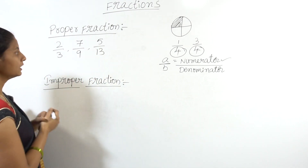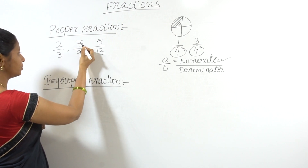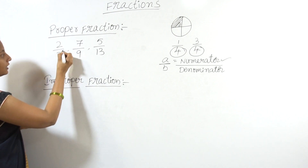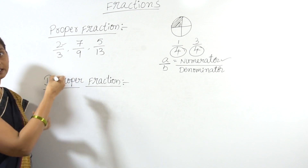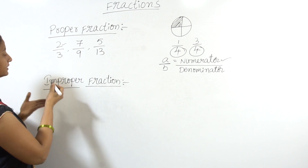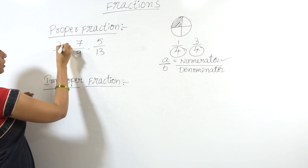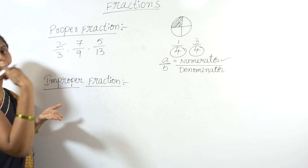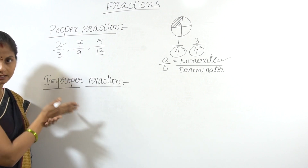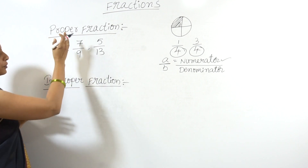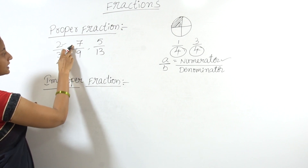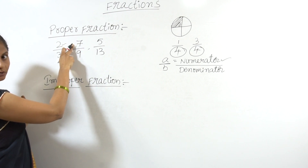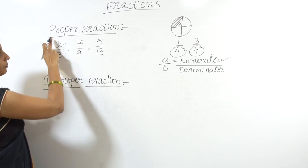In 2 by 3, 2 is the numerator and 3 is the denominator. We will compare the numerator and denominator. Fractions that have the numerator smaller than the denominator are called proper fractions — the numerator is less than the denominator. This fraction is a proper fraction.